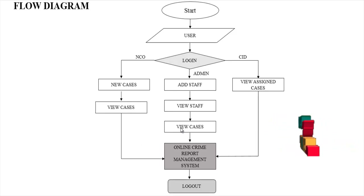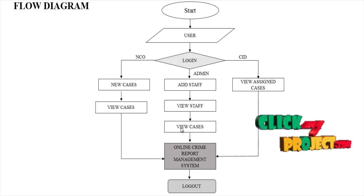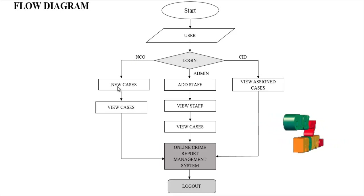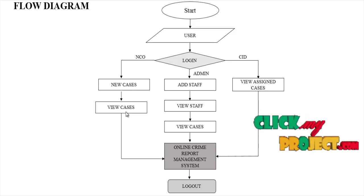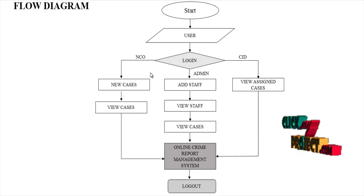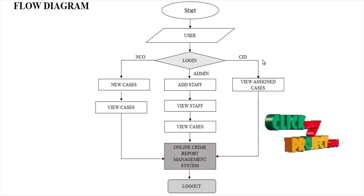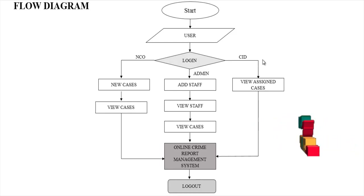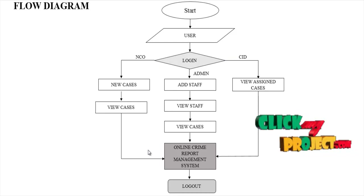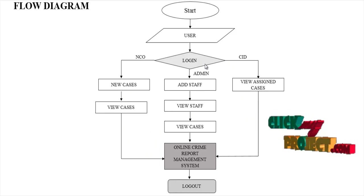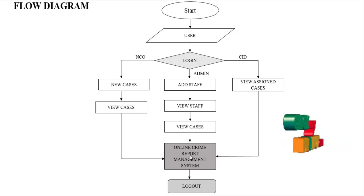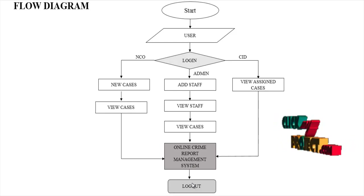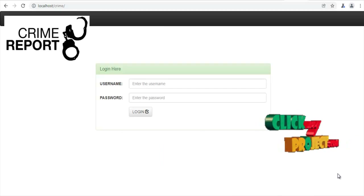The admin can manage staff — add staff details and view staffs — and also view the list of cases. The NCO, or non-commissioned officer, can manage new cases, view new cases, and assign cases to officers. The CID officers can view cases assigned to them. These three users perform their respective roles in the online crime report management system, then log out.